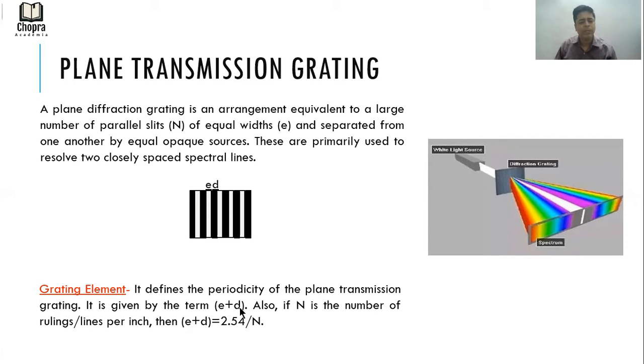Also, if N is the number of rulings or lines per inch, then E plus D is equal to 2.54 by N. That is how you see the relation between grating element and number of slits or number of lines on the grating.